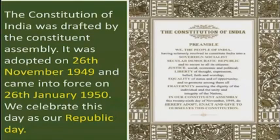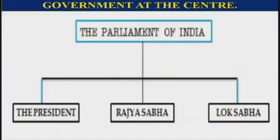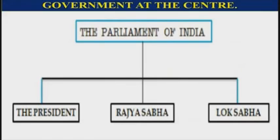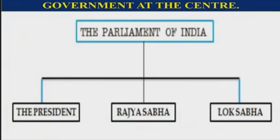Let us learn about the government at the center, which is also known as the union government. The parliament of our country is the supreme lawmaking body, and it constitutes the president, the Rajya Sabha, and the Lok Sabha.